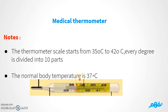The normal body temperature is 37 degrees Celsius.